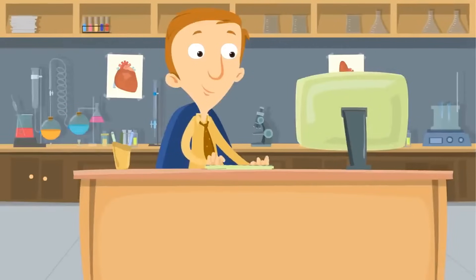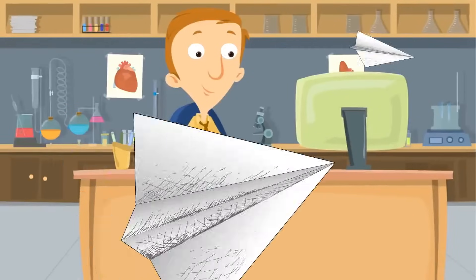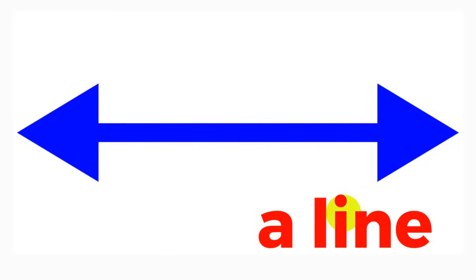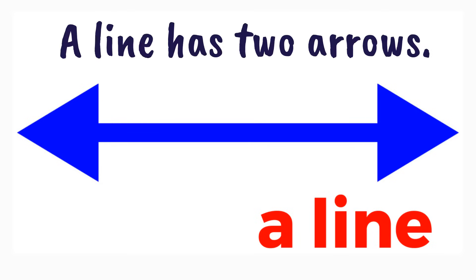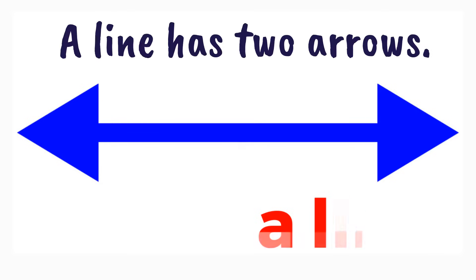In math, a line looks like this. You have a line with two arrows, one on each end. These arrows show that the line keeps going on forever in both directions. A line has two arrows.